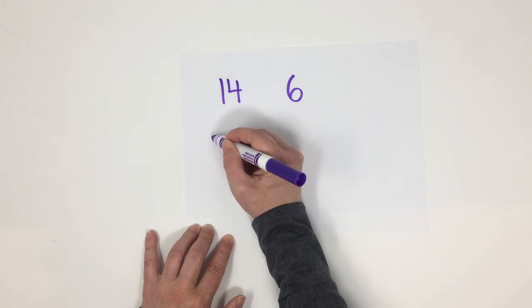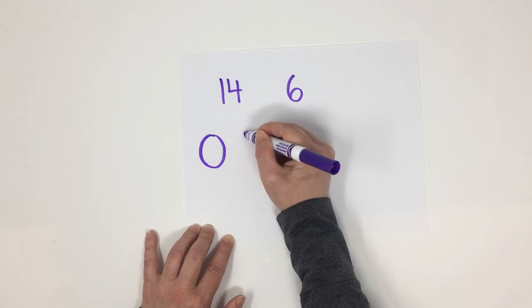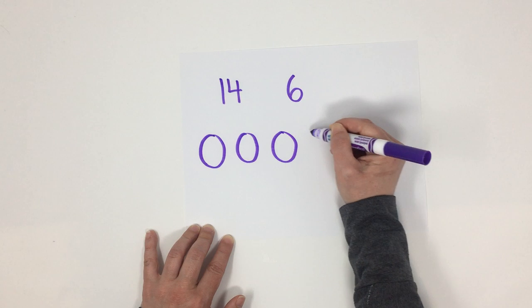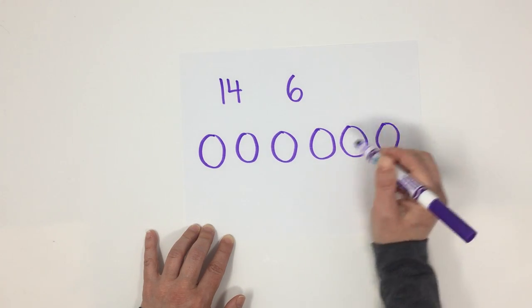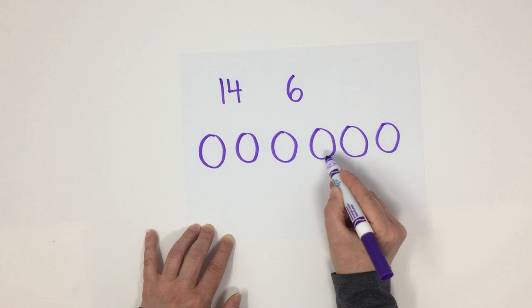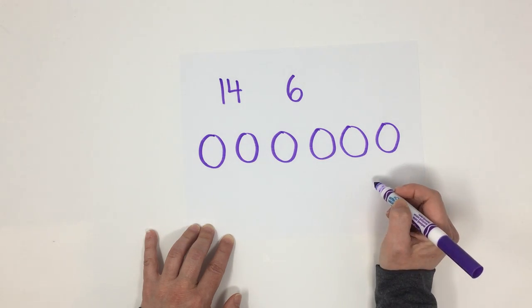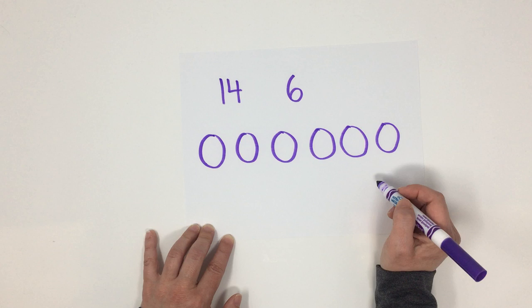Well, let's start by drawing the friends. 1, 2, 3, 4, 5, 6. 1, 2, 3, 4, 5, 6. Now we're going to equally distribute the candies amongst the friends.